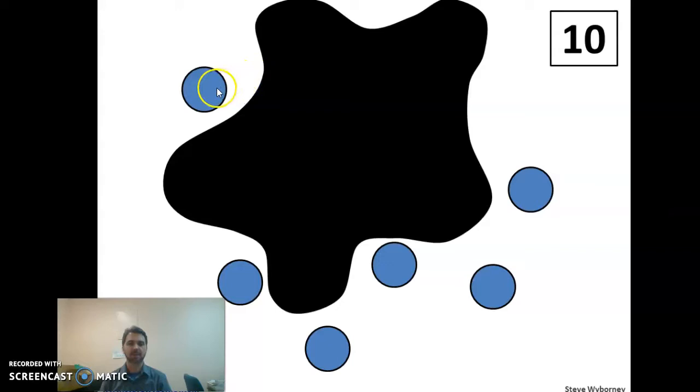So we've got a big splat there. How many dots are left? Count. How many dots did you get? One. You get six. Let's see. One, two, three, four, five, six.